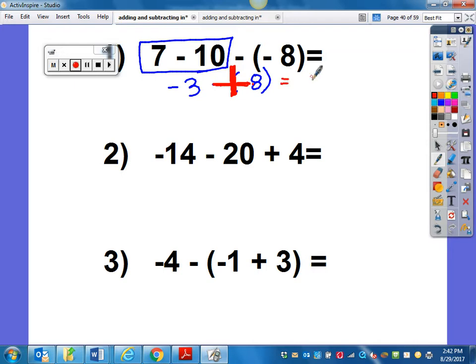Different sign subtract. Keep the sign of the higher number, then you'll be exact. So I'm going to keep it as 5. Let's look at the second one.